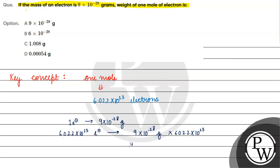What will it be? It gives us 9 into 6.022 into 10 raised to the power minus 5 grams. When we solve this, it will be basically 54.198 into 10 raised to the power minus 5 grams.